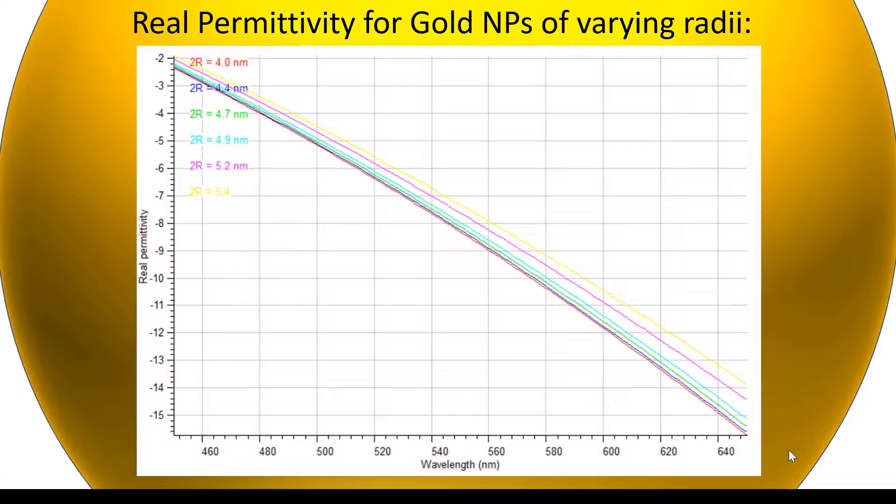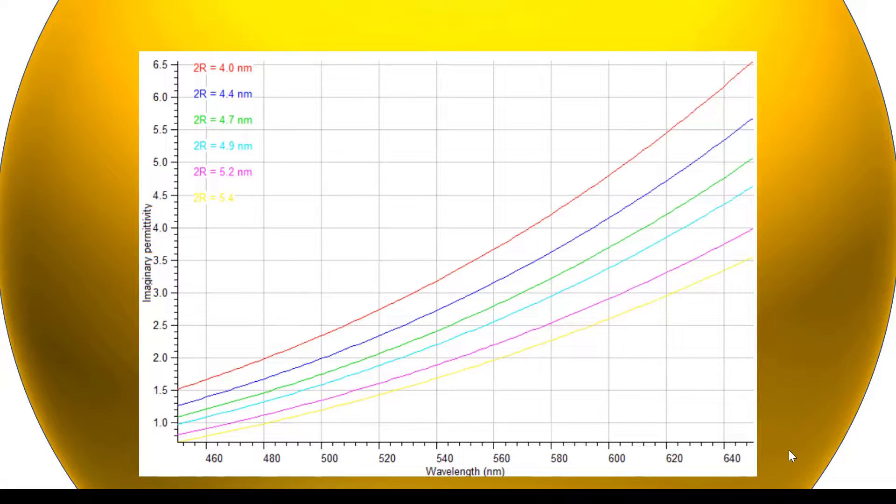Now we can plot the permittivity for individual gold nanoparticles, wherein we have a negative real part and a positive imaginary part. This shows us that it can support LSPR in the visible spectrum.